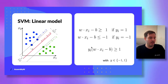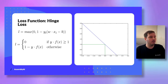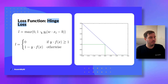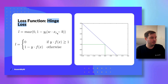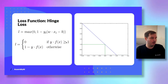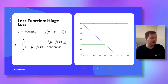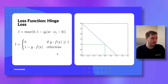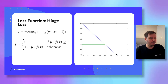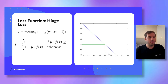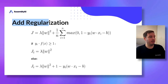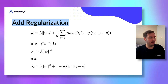Now we define a loss function. One part is the hinge loss, calculated as the maximum of zero or (1 minus y_i times (w times x minus b)). This is zero if we are on the correct side of the decision boundary, and positive otherwise. So the further we are from the decision boundary on the incorrect side, the higher the loss. We also add a regularization term.